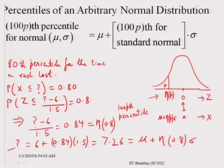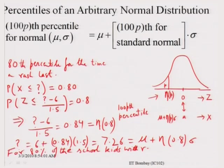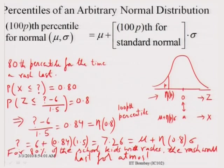What we have is that for 80 percent of the school kids with rashes, the rash would last for at most 7.26 days. We used the standard normal curve to find the percentile for a variable which has a normal distribution with mean mu and sigma.